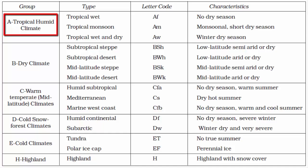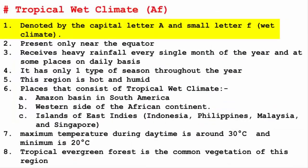In this video, we'll get to know the first subdivision of the group A tropical humid climate, and this video is going to be on tropical wet climate. It is denoted by the capital letter A and small letter F. Capital letter A stands for the entire group, which is the tropical climate, and small letter F is the subdivision which represents wet climate, and together it makes the tropical wet climate.